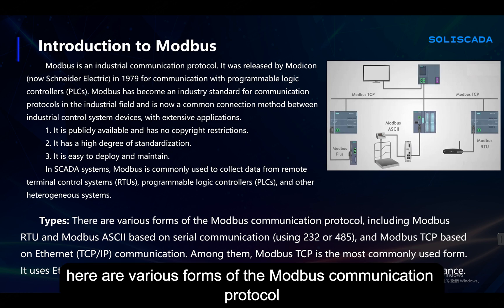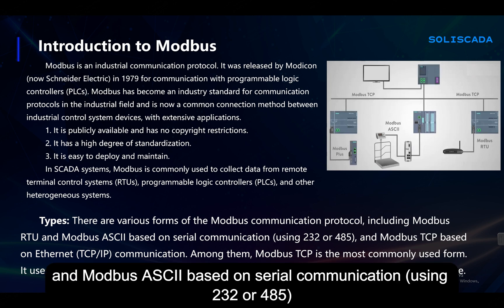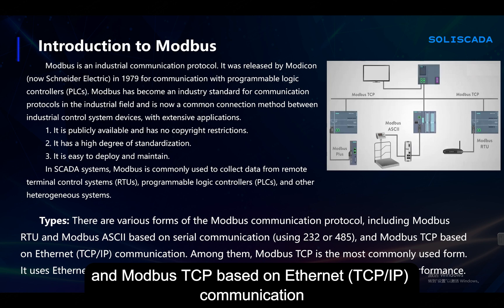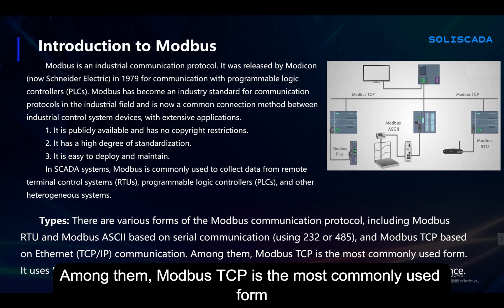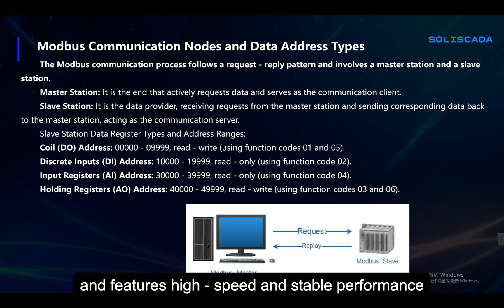Here are various forms of the Modbus Communication Protocol, including Modbus RTU and Modbus ASCII based on serial communication using RS-232 or RS-485. And Modbus TCP, based on Ethernet TCP/IP communication. Among them, Modbus TCP is the most commonly used form. It uses Ethernet as the communication medium and features high speed and stable performance.